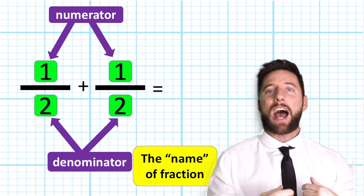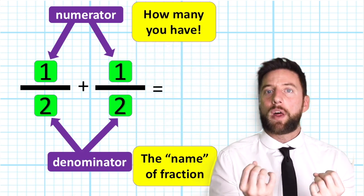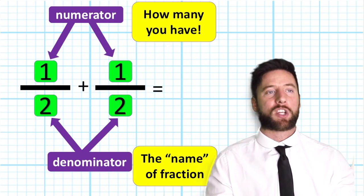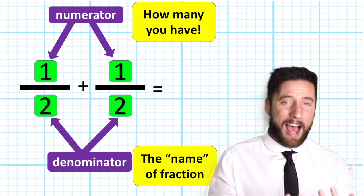The numerator is how many fifths, the number, the quantity, how many fifths we have. One fifth, three fifths, four fifths. How many of that value do we have?